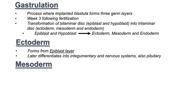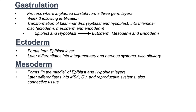Now the mesoderm is the middle germ layer. It literally forms within or in the middle of the epiblast and hypoblast layers. The mesoderm will later differentiate into the musculoskeletal, cardiovascular, and reproductive systems, and also into connective tissue. So this mostly will become muscle, bone, the gonads, etc.